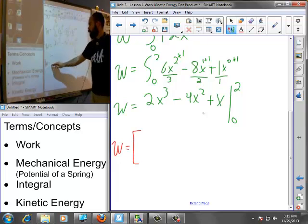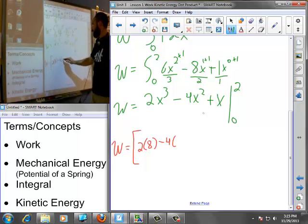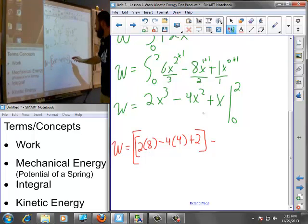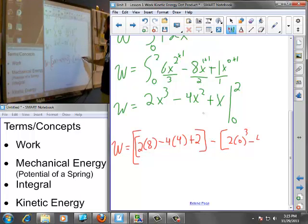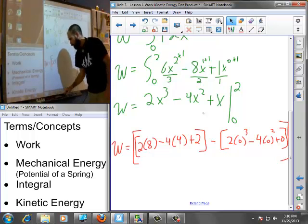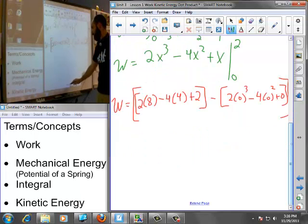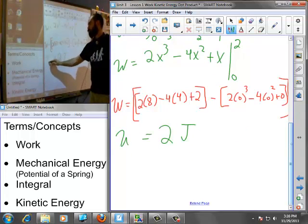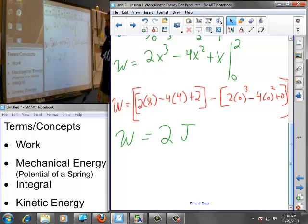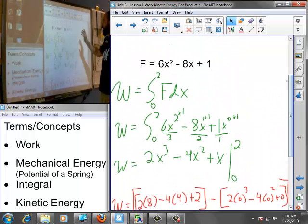All you have to do then is evaluate this function at two and at zero. So the work done is, well, it would be two times eight minus four times four plus two, minus, and all of these are zero because it would be zero minus four times zero plus zero. Showing my work thoroughly for those who need a little more practice with it. So when you do this, you should find that you end up with two joules.